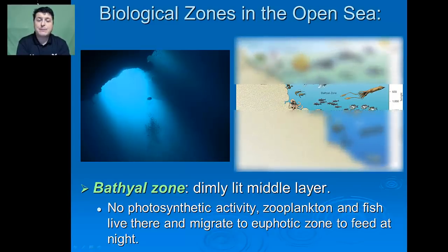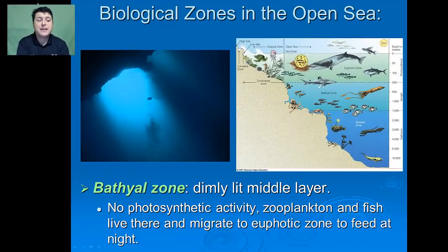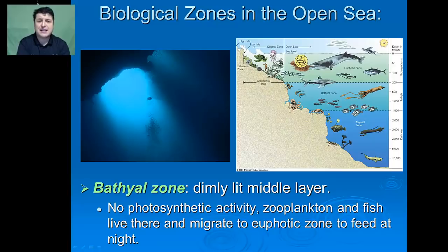If we leave the euphotic zone and dive a little bit deeper, we enter the bathyal zone — the dimly lit middle layer of the ocean, sometimes called the twilight zone. Here, photosynthetic activity is minimized by the absence of light. Zooplankton and fish will live here and then migrate to the euphotic zone to feed at night when there's less chance of predation.